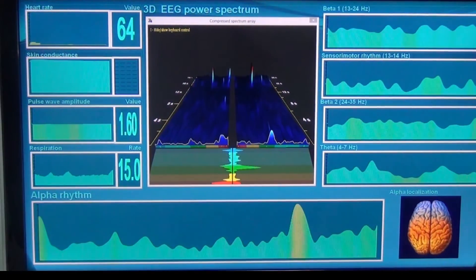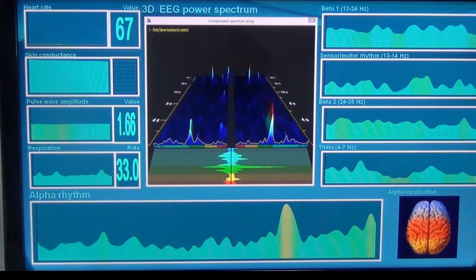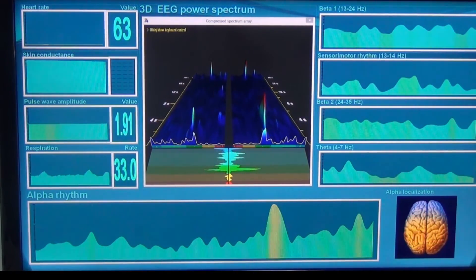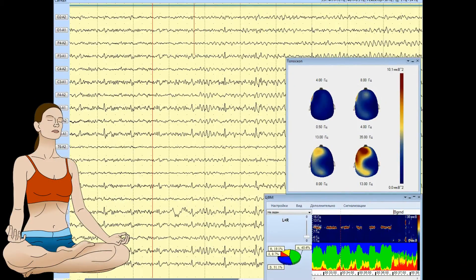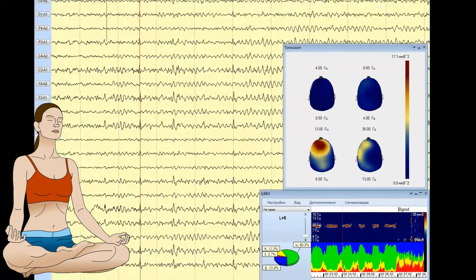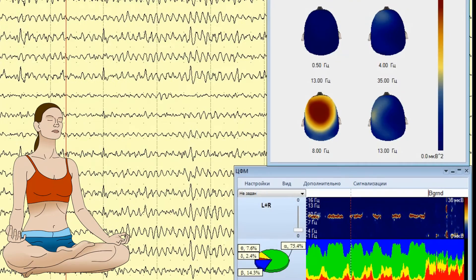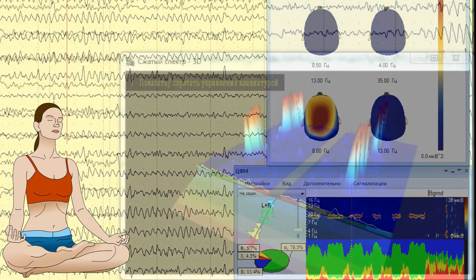Example of multi-parameter training with mirror spectrogram to display the EEG signals: alpha, beta, theta rhythms and sensory motor rhythm, skin conductance, heart rate, respiration. Multi-parameter signals registration in real time using over 20 EEG channels during meditation.